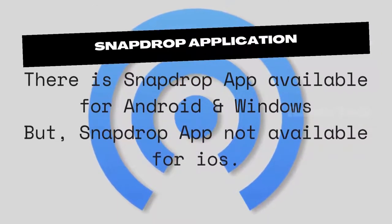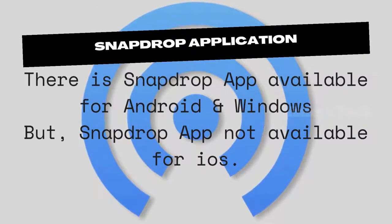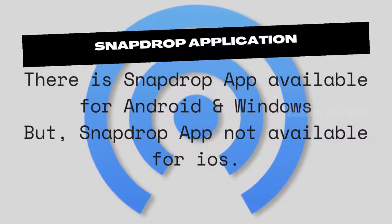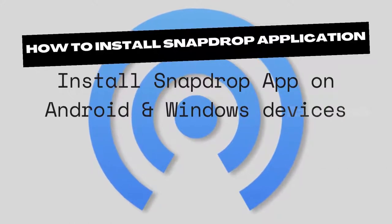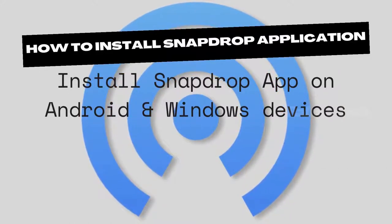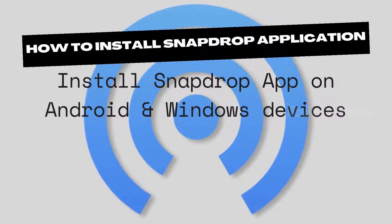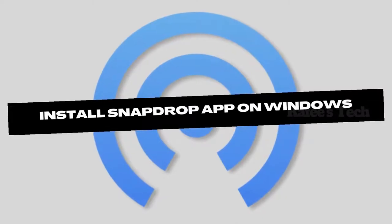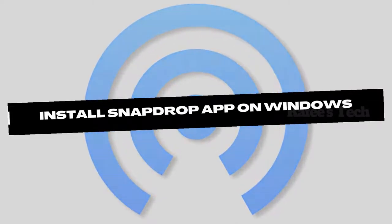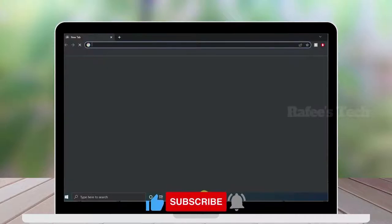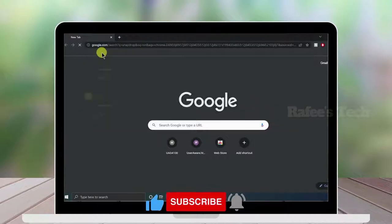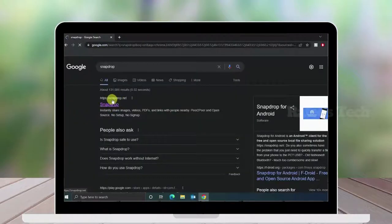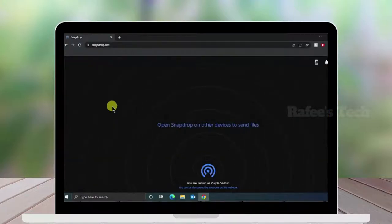There is a Snapdrop application available for Android and Windows devices, but the Snapdrop application is not available for iOS devices. Let's see how to install the Snapdrop application on your Android and Windows devices. Open your web browser on your Windows PC, search for Snapdrop, hit enter, click the link, and open the Snapdrop website. On the upper right side you can see an install link — click on it and click Install.